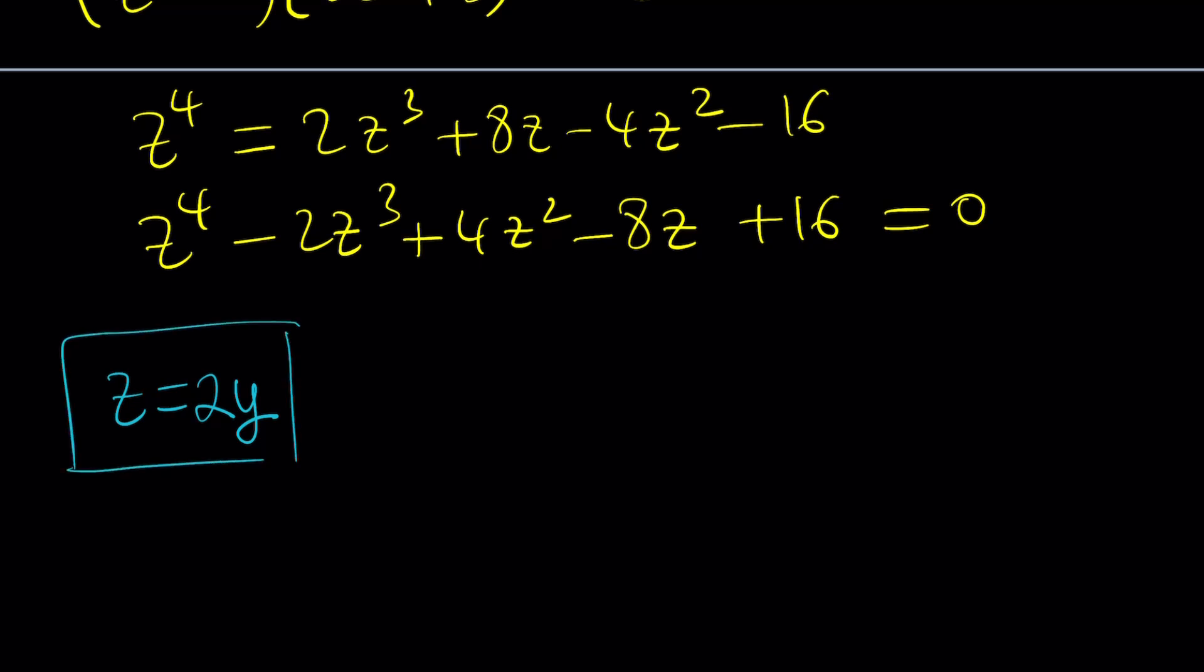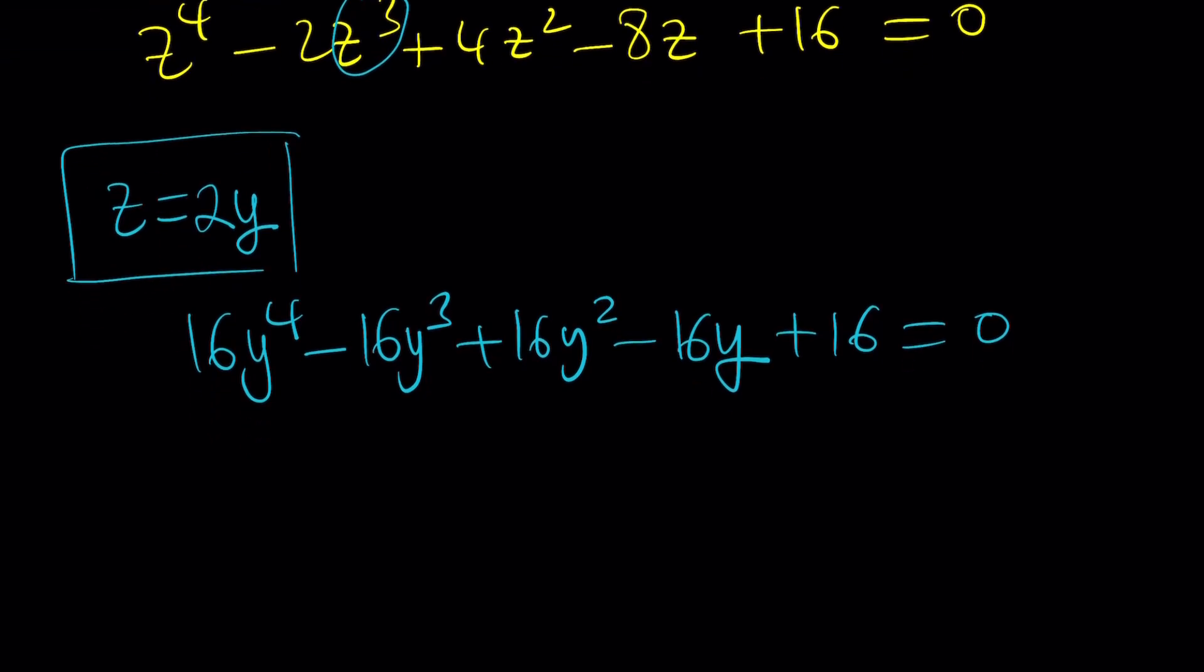When you do that substitution, you're going to get something super duper nice. 2y to the fourth power is 16y to the fourth. 2y to the third power is 8y cubed multiplied by 2, giving 16y cubed. Then 16y squared, then 16y, and finally plus 16 equals 0. So everything has 16 in it with alternating plus minus signs. We're going to divide everything by 16 and get y to the fourth minus y cubed plus y squared minus y plus 1 equals 0.